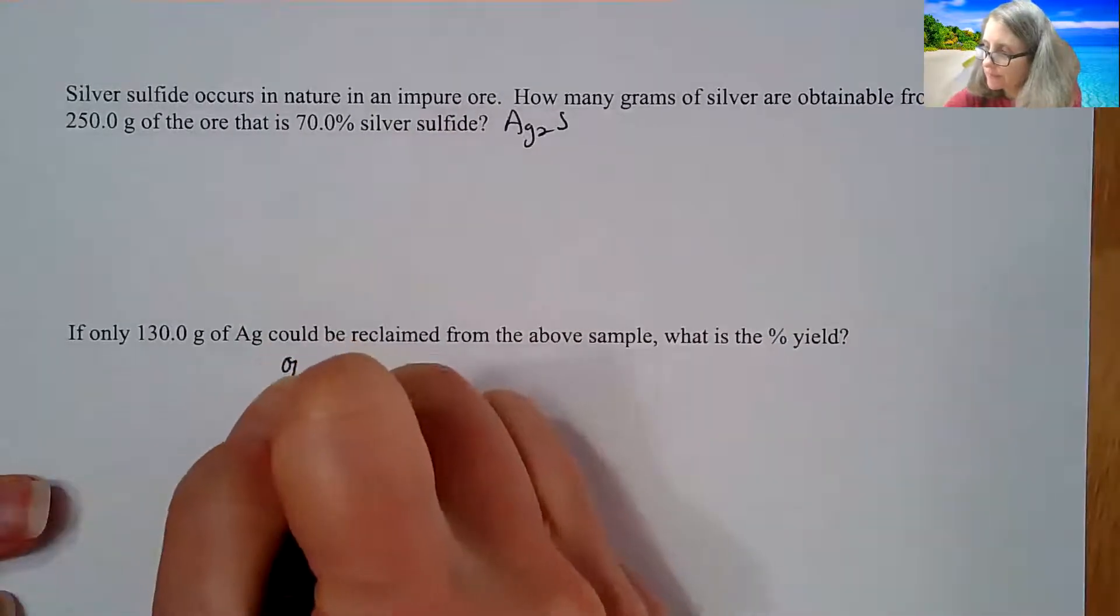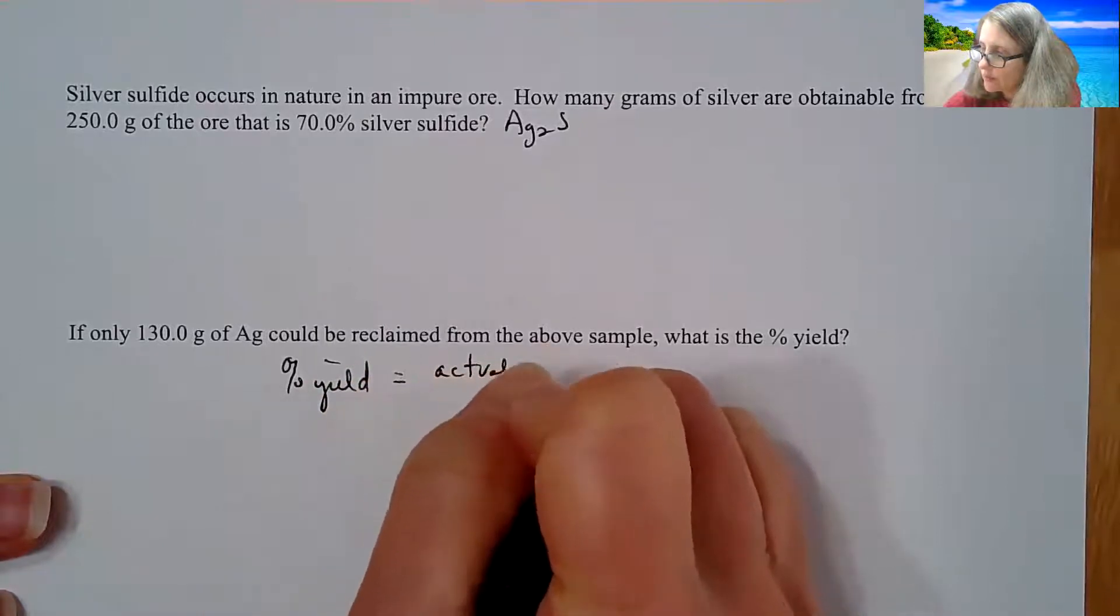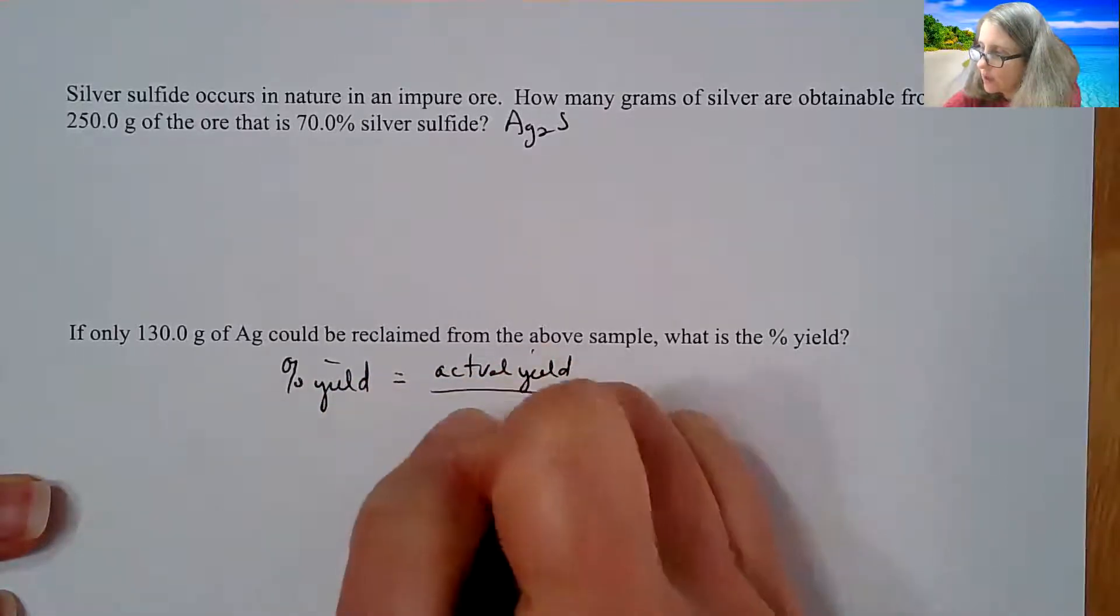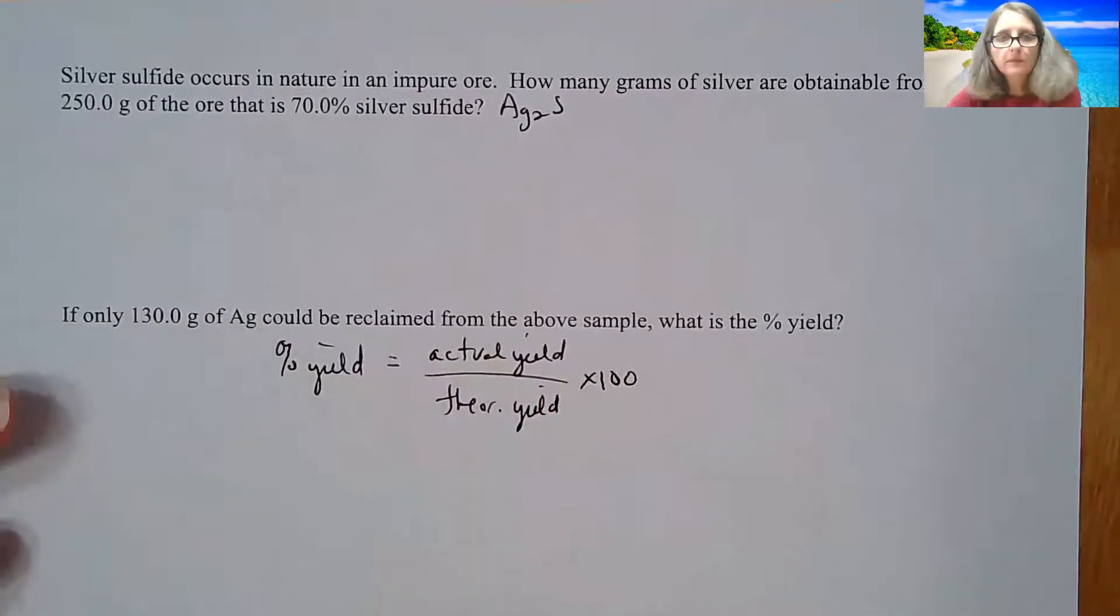So down here, percent yield is what we call the actual yield over the theoretical yield times 100.